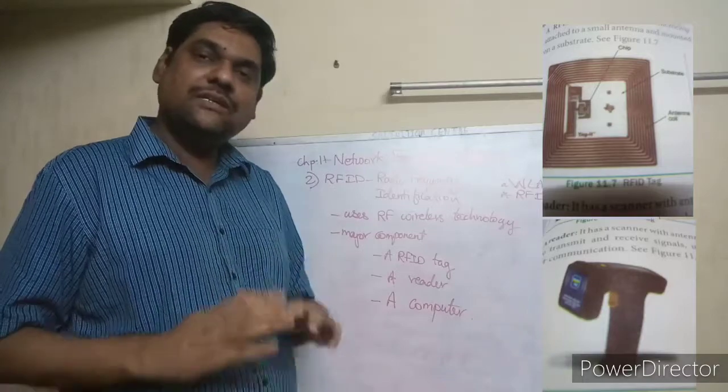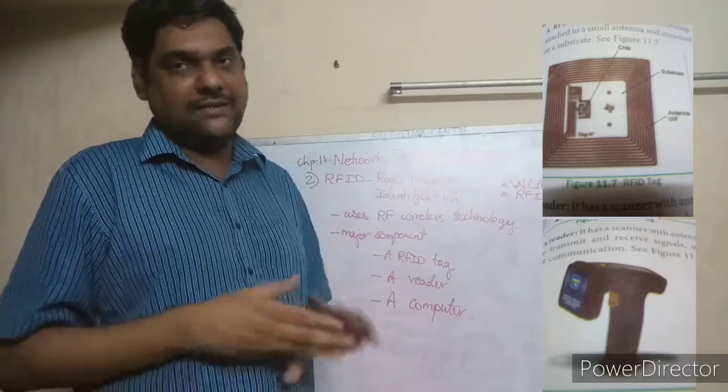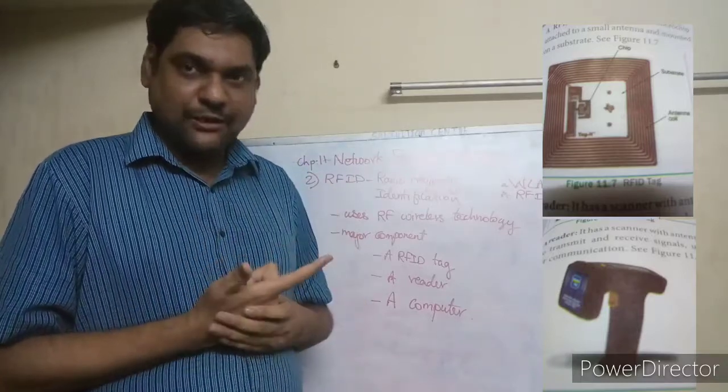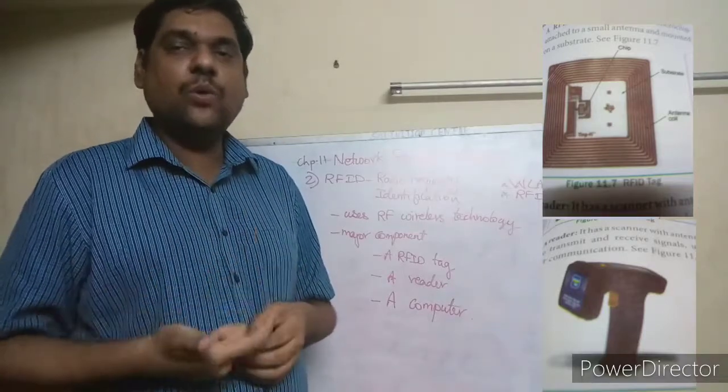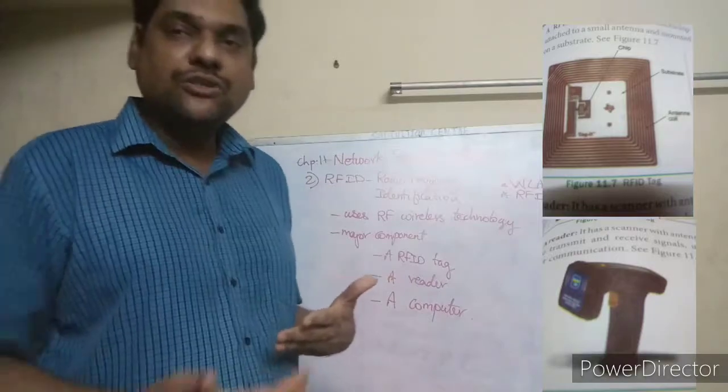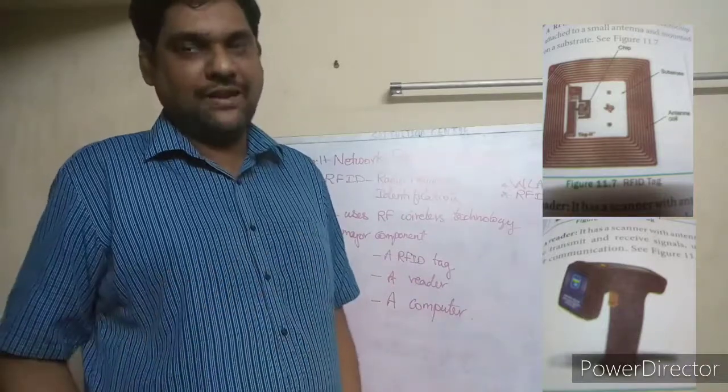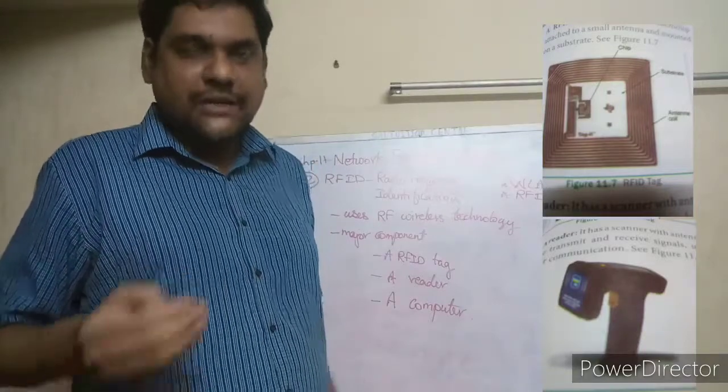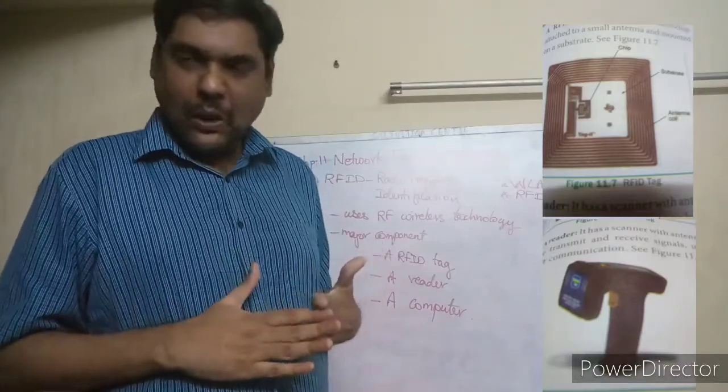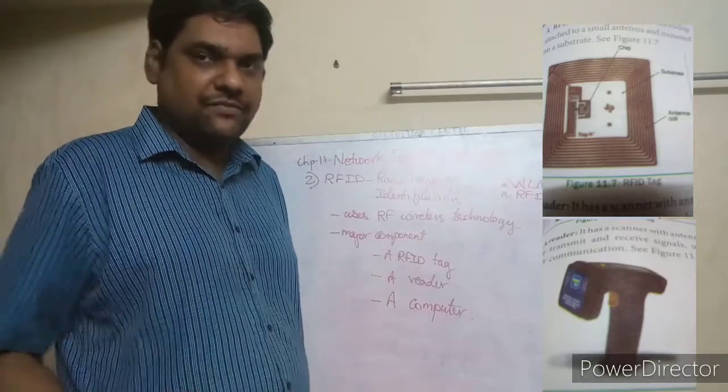And this RFID is of two types: passive RFID and active RFID. What is passive RFID means is, the tag will not have its own power source—that is, it cannot generate electricity or it does not get the current on its own. It has to get the power only from the reader. That kind of RFID is called passive RFID. Whereas active RFID means the object tag will have a power source on its own. So these are the two types of RFID: active RFID and passive RFID.